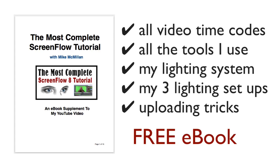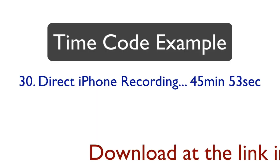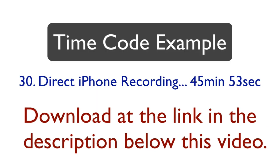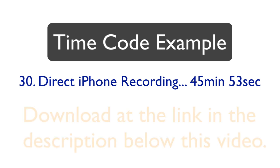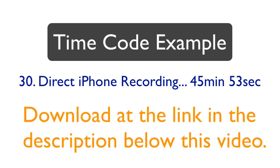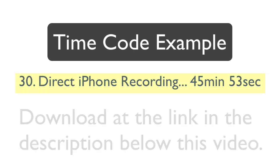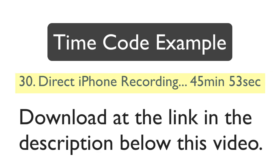I've got a really cool 15-page e-book I put together for you. I cover all of these topics — it's completely free. One page has all 33 time codes, all 33 topics I cover in this video. So a week from now, if you forgot how to do something, just look it up on that page. It says at 45 minutes 53 seconds — that's where he covers it. Play this video again, go to that point, and it'll show you how to do that particular item.